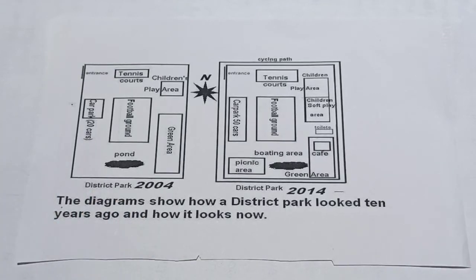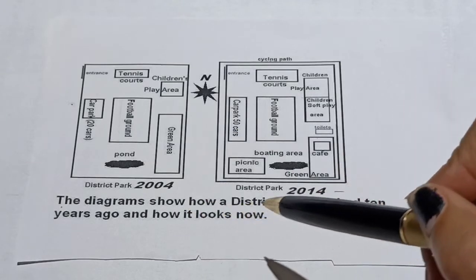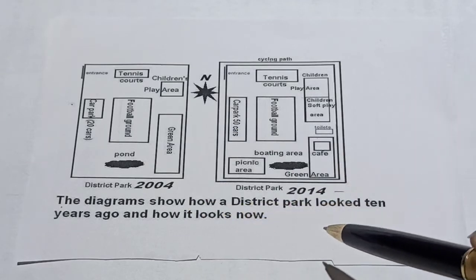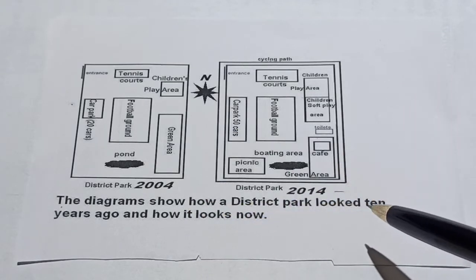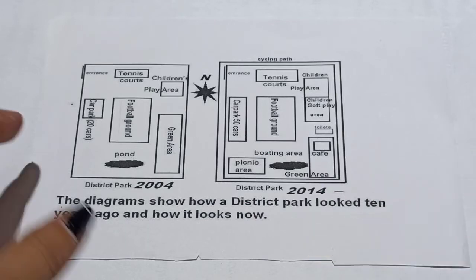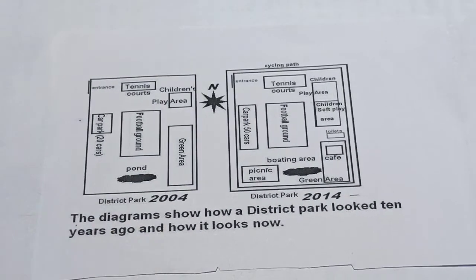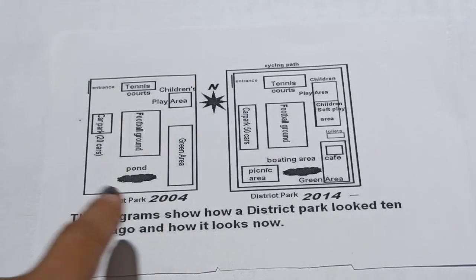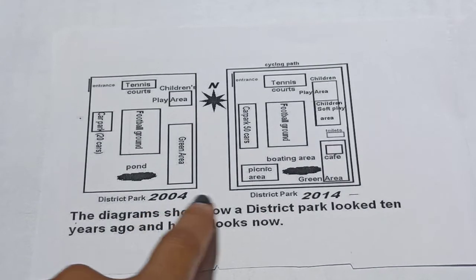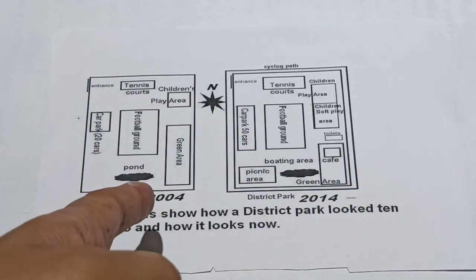Welcome to our channel. Today in this video I'll discuss IELTS Writing Task 1. The question for today is: the diagrams show how a district park looked 10 years ago and how it looks now. We are given a district park — how it used to look in 2004 and how it looked in 2014.